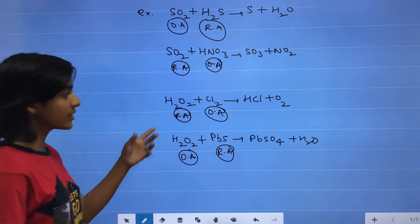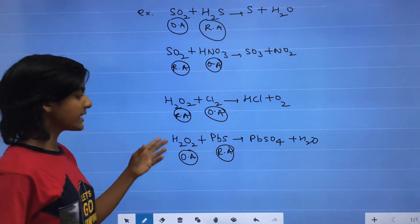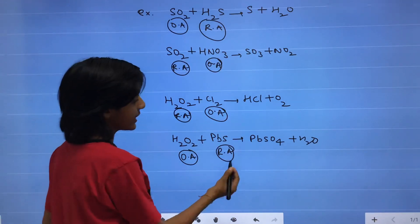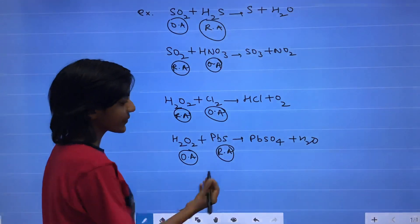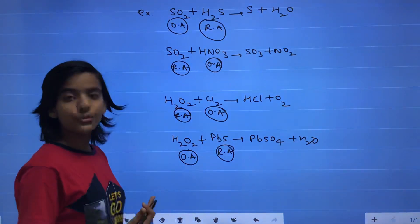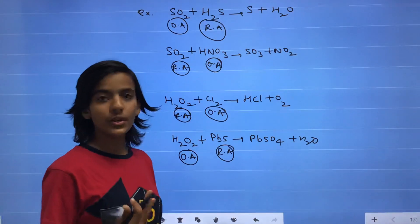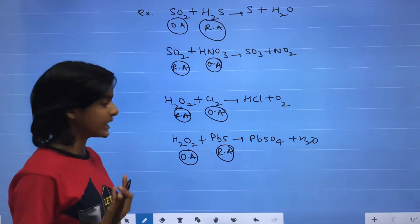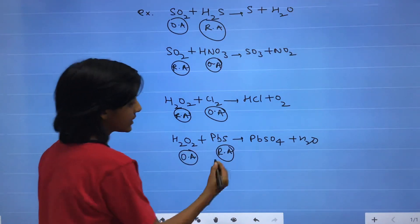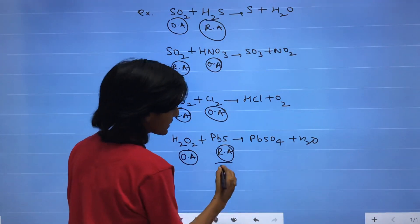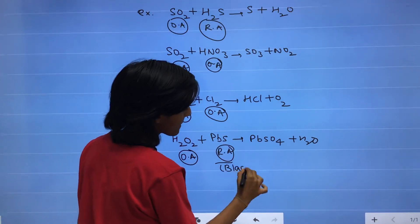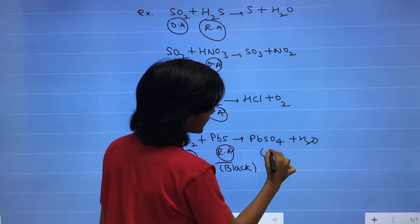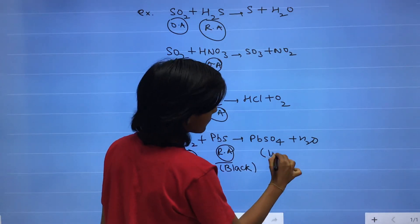So a compound may act as both an oxidizing agent and a reducing agent. H2O2 is also used in restoring old black paintings. The color of PbS is black, while PbSO4 is white.